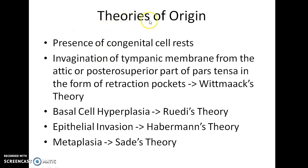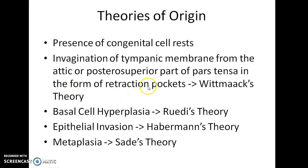There are various theories of origin for a cholesteatoma. The presence of congenital cell rests, and invagination of the tympanic membrane from the attic or posterosuperior part of pars tensa in the form of retraction pockets can cause cholesteatoma. This theory is known as Wittmaack's theory.